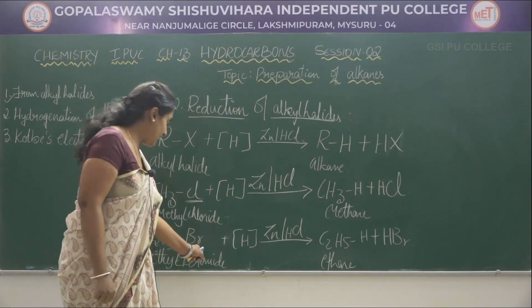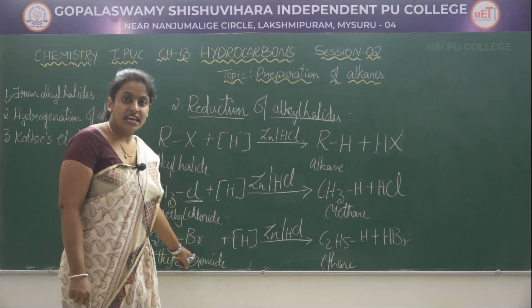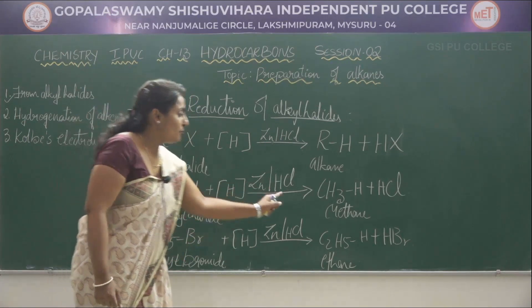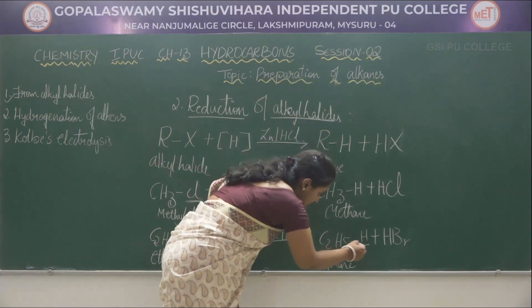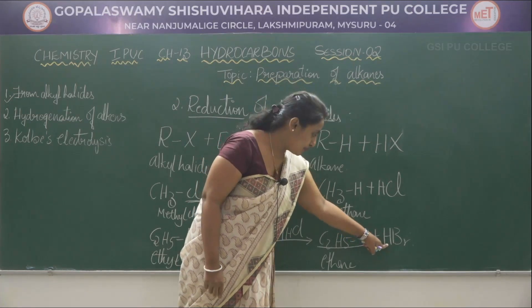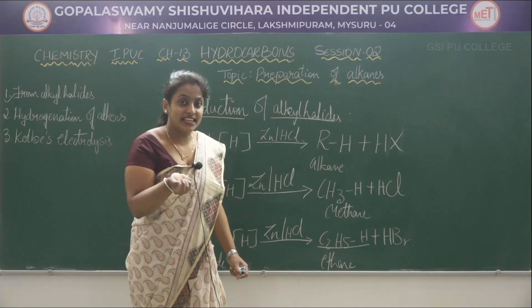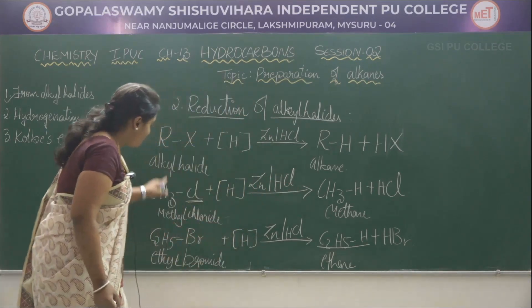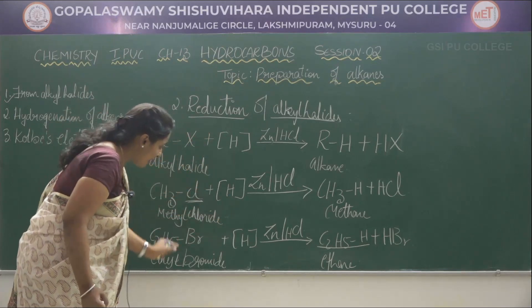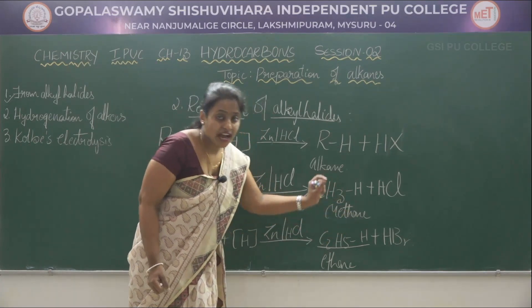Similarly, in the next example, we take ethyl bromide (C₂H₅Br). On reduction by addition of hydrogen in the presence of zinc and HCl, we get C₂H₅H plus HBr as the byproduct. C₂H₅H is C₂H₆ — ethane — and HBr is hydrogen bromide as the byproduct. The reduction of alkyl halide means addition of hydrogen giving alkanes with hydrogen halide as the byproduct.